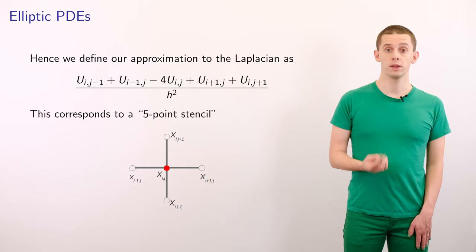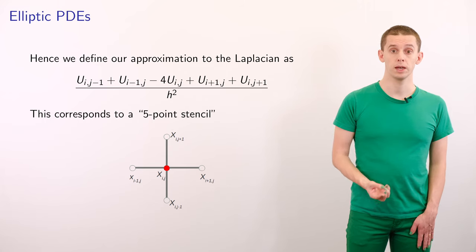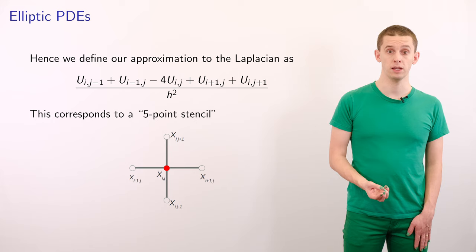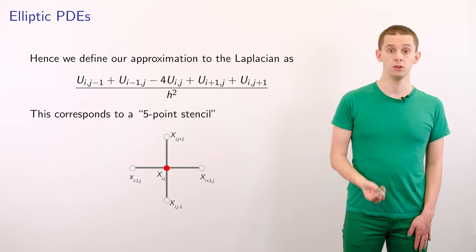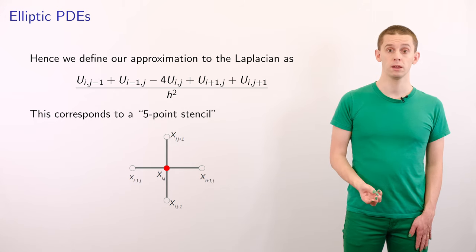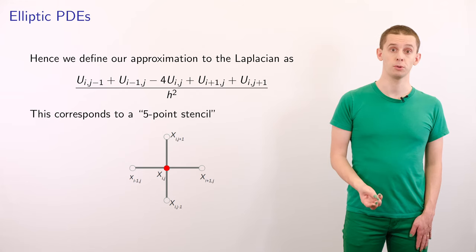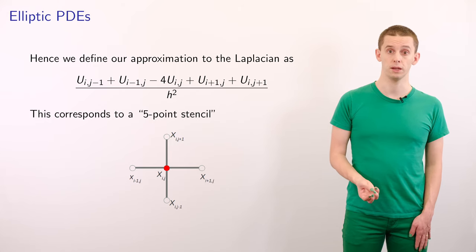So we can therefore define our approximation to Laplacian at a grid point ij as u i j minus 1 plus u i minus 1 j minus 4 u i j plus u i plus 1 j plus u i j plus 1 divided by h squared. And that corresponds to the five point stencil shown here.